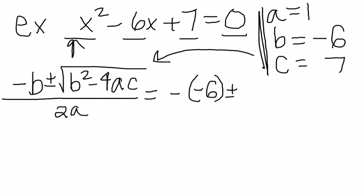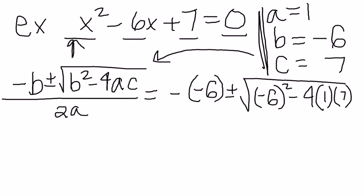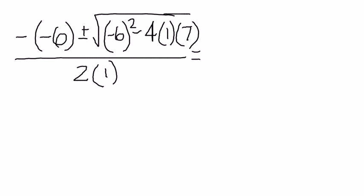After you have your equation filled out, you want to simplify. Negative negative 6 is really positive 6, plus or minus the square root, negative 6 squared is 36, minus 4 times 1 is 4 times 7 is 28.